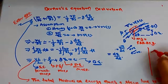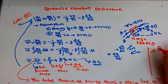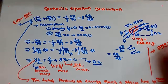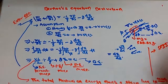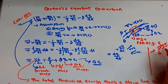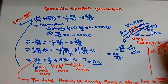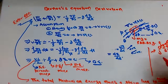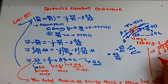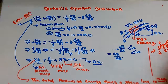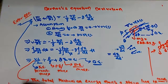The assumptions made for the Bernoulli equation are: flow is steady, frictionless, inviscid, and incompressible. If we also assume the flow is irrotational, then the total mechanical energy along the entire flow field is constant, not just along a streamline.